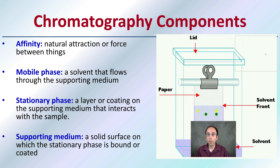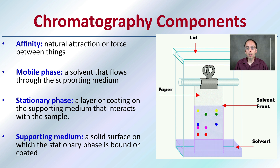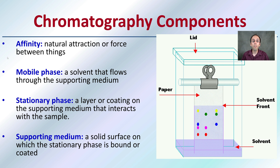To get into some of those terms with a little more detail: affinity is a natural attraction force between things. The mobile phase is the solvent that flows through the supporting medium — we can see here's that solvent front, that's where it's traveling, its furthest point of travel. The stationary phase is a layer or coating on the supporting medium that interacts with the sample, like the coating on the paper. The paper itself is considered the supporting medium — the solid surface where the stationary phase is bound to or coated onto.